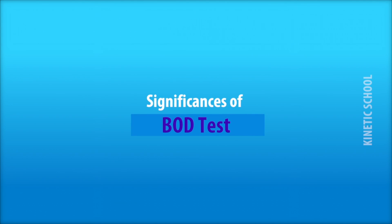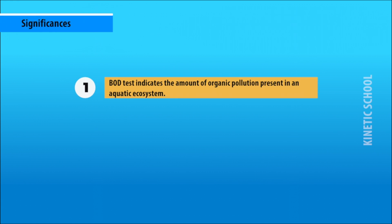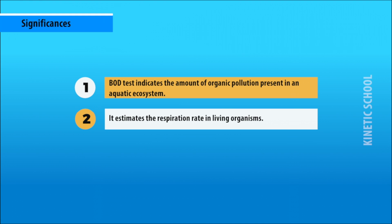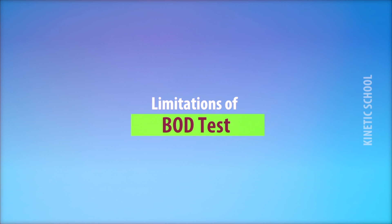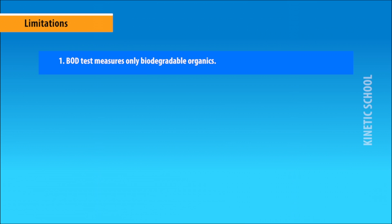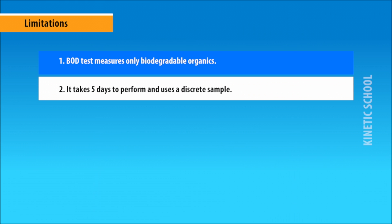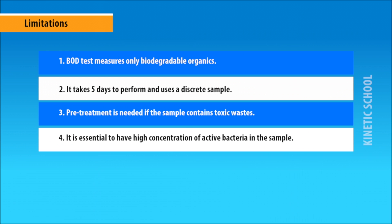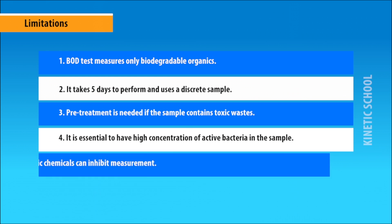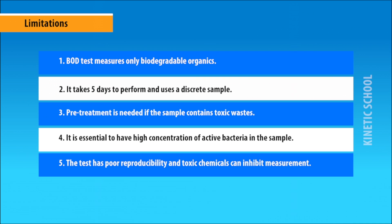The significance of the BOD test: it indicates the amount of organic pollution present in an aquatic ecosystem, estimates the respiration rate in living organisms, and provides data used for the development of engineering criteria for the design of wastewater treatment plants. Limitations: BOD measures only biodegradable organics, takes five days to perform, uses discrete samples, requires pre-treatment if the sample contains toxic waste, requires high concentrations of active bacteria, has poor reproducibility, and toxic chemicals can inhibit measurements.